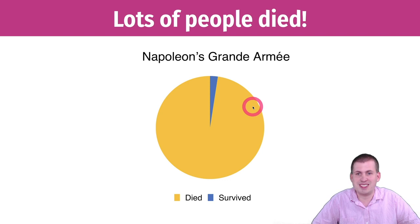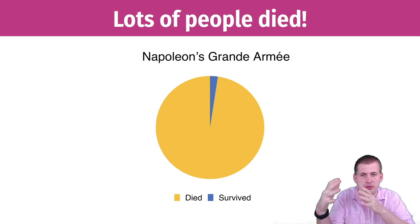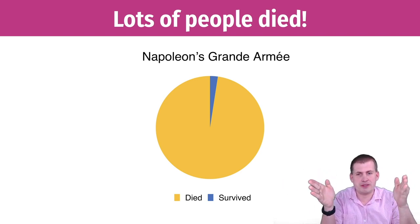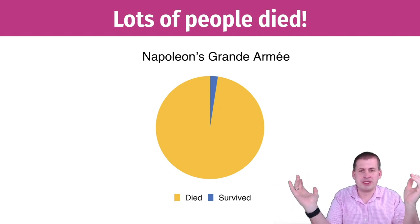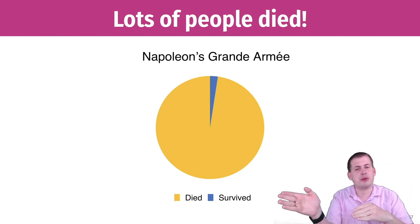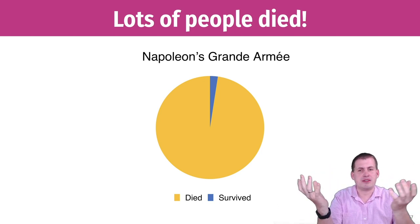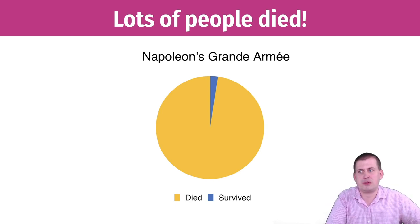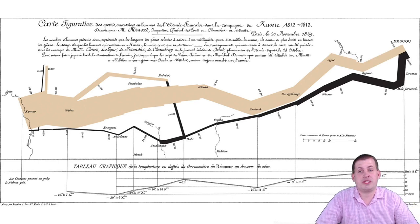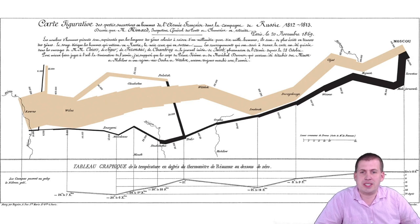The problem with telling this story using three separate data points — distance, temperatures, and number of deaths — is that we don't get the complete picture. We don't know when people died, how that was connected to temperature, or at what point during the retreat they died. What we can do is combine all of these data points into one graphic to tell a much richer story. This was actually done by a French statistician named Joseph Minard, who made it in 1869.